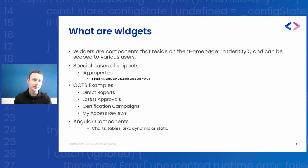So what are widgets? Widgets are components that reside on the home page in IdentityIQ. You can configure permissions to control who can see those widgets. They are a special case of snippets, and if you want these to work, you will have to set a specific property to true in your IIQ property file — otherwise you'll be banging your head against the wall. Some out-of-the-box examples include the direct report widget, latest approvals, certification campaigns, and my access review. Widgets contain a lot of Angular components, so you can have charts, labels, text, and dynamic and static content.